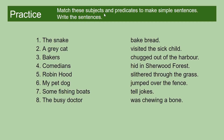Now match these subjects and predicates to make simple sentences. Here are the subjects: the snake, a grey cat, bakers, comedians, Robin Hood, my pet dog, some fishing boats, the busy doctor. And the predicates: baked bread, visited the sick child, chugged out of the harbour, hid in Sherwood Forest, slithered through the grass, jumped over the fence, tell jokes, was chewing a bone. Let's begin.